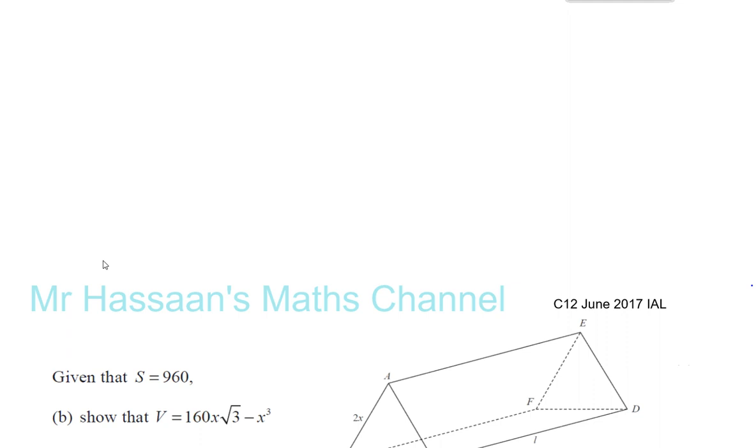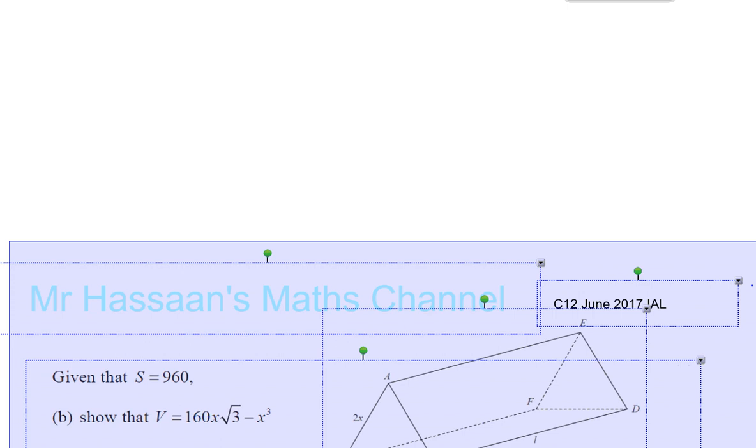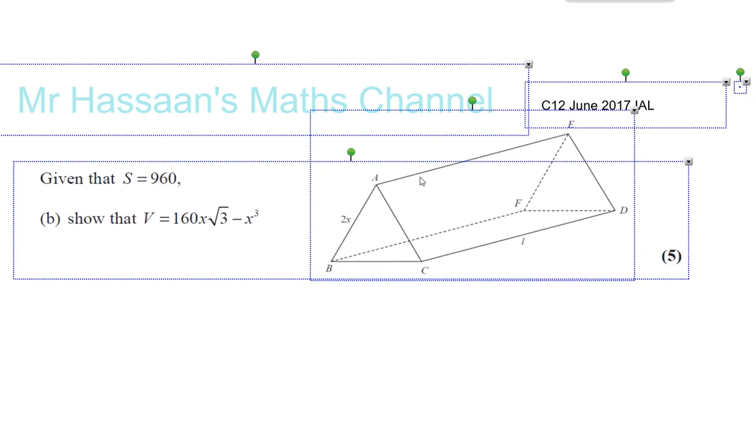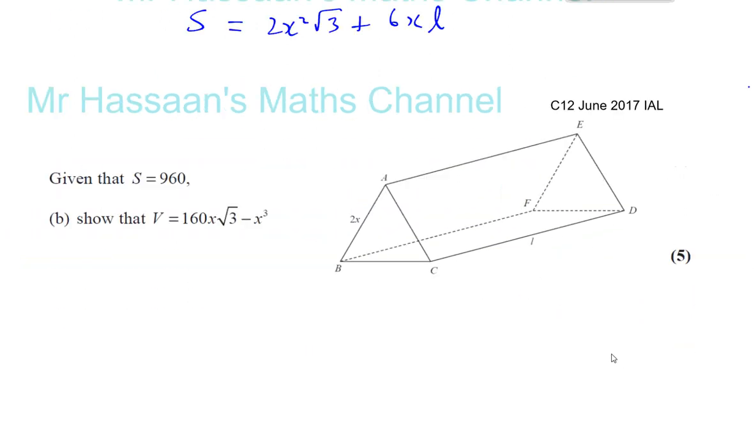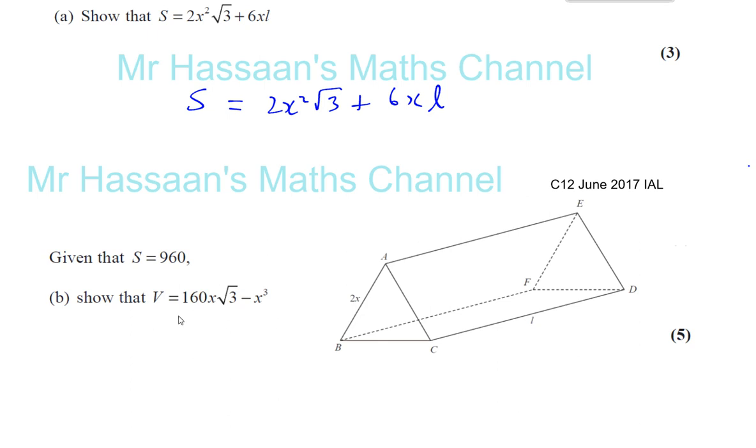And part B tells us to find, given that S equals 960, show that V is 160x root 3 minus x cubed. So another point, don't ever give up thinking that I don't know how to do part A so I'm not going to do part B. No, that's rather foolish of you when they've already given you the answer to part A and you can see you're going to use it for part B. So don't ever think you can't do the first part of the question so you don't look at the rest of it.